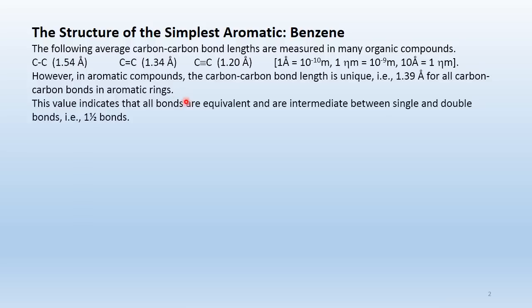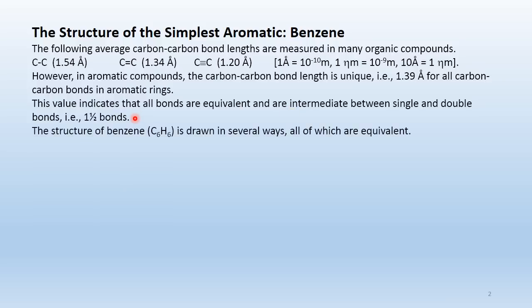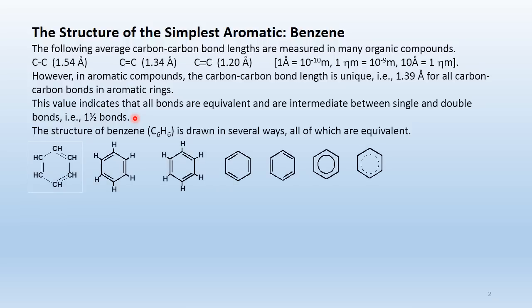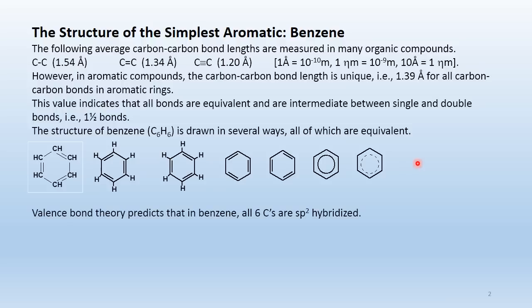All of the bonds are equivalent in length, and the length is intermediate between that of a single and double bond — you might describe them as one-and-a-half bonds. The structure of benzene is drawn in several ways, all equivalent. Notice there are three pi bonds that can be drawn in any alternating position, showing the ring is fully conjugated.